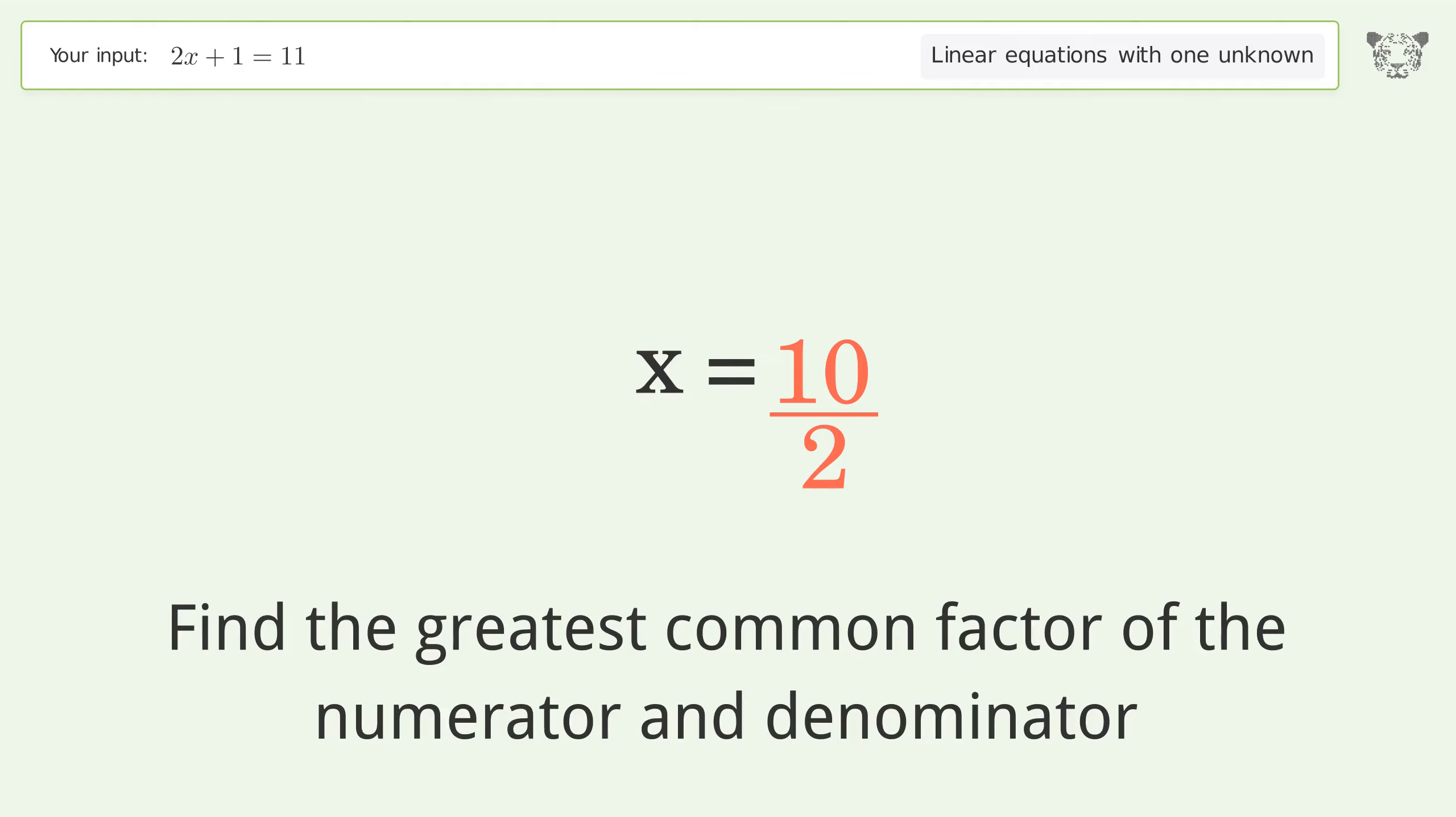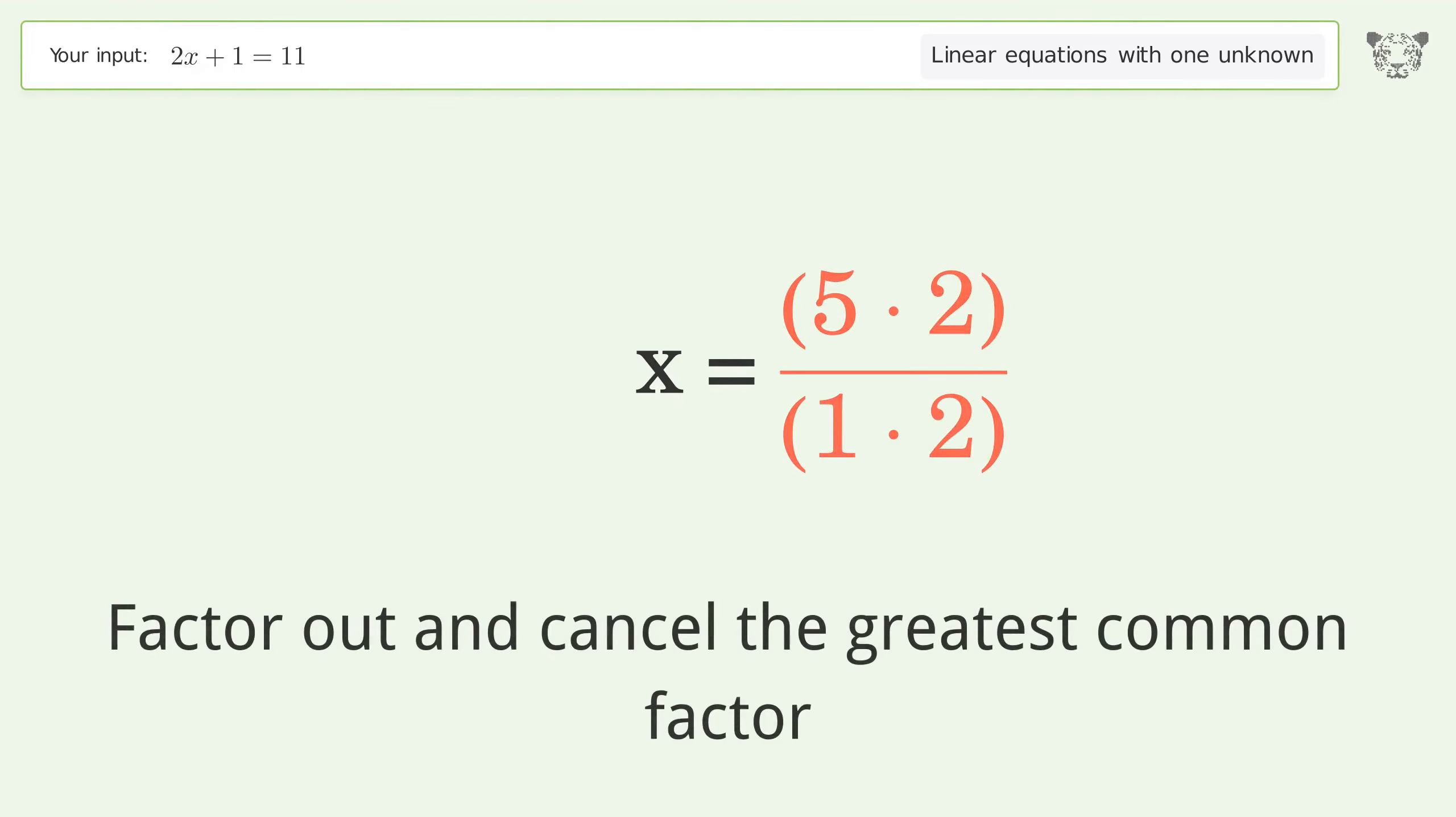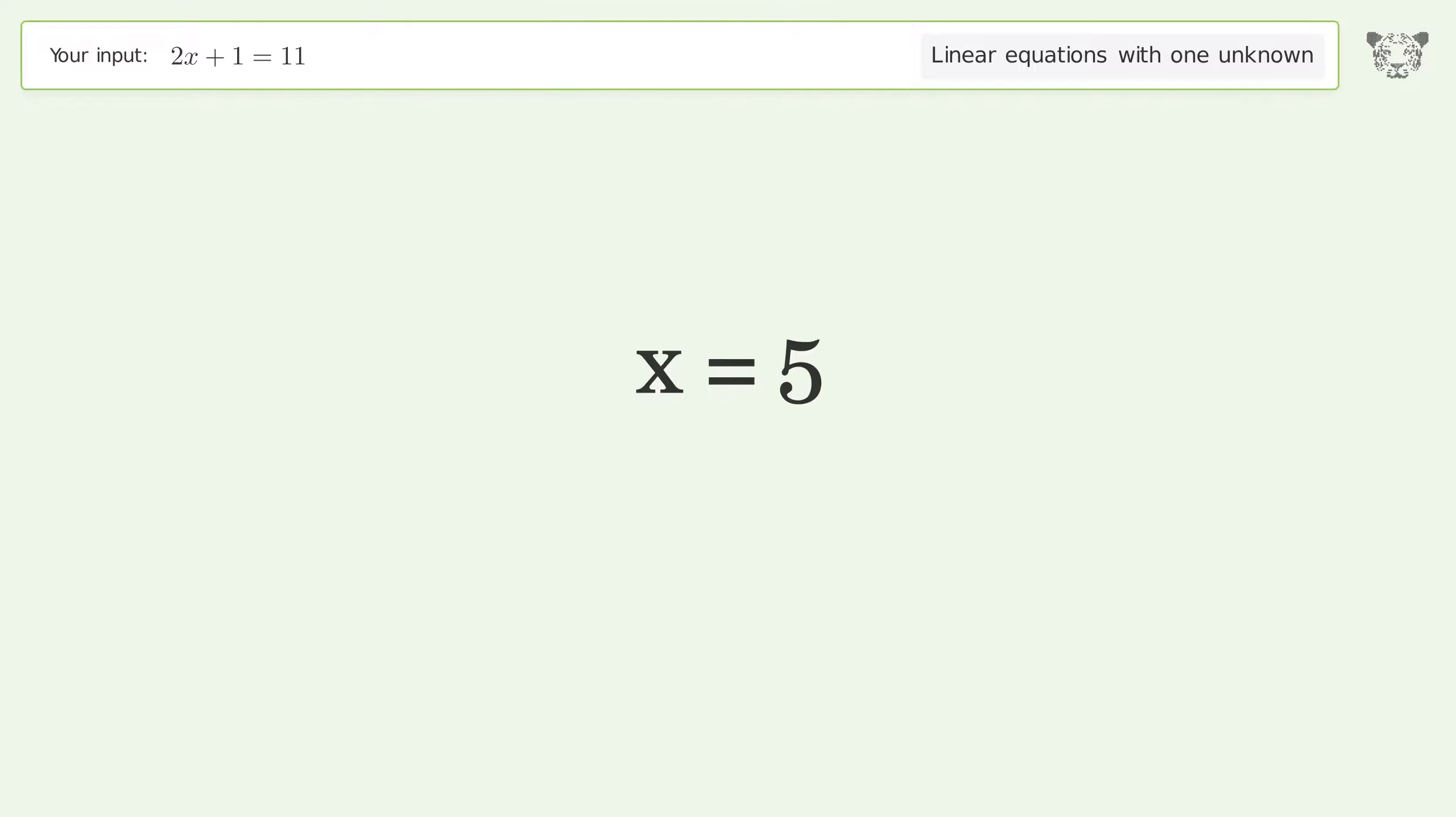Find the greatest common factor of the numerator and denominator. Factor out and cancel the greatest common factor. And so the final result is x equals 5.